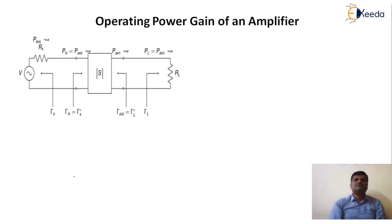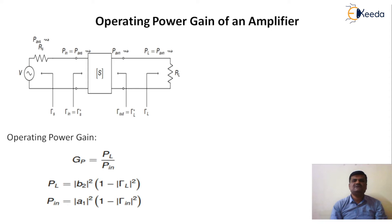Figure shows a two-port network with different powers. Now we will calculate operating power gain. Operating power gain Gp is given as equal to PL bar divided by Pin, where PL is power delivered to the load divided by input power. PL equals mod b2 squared into bracket 1 minus mod gamma L squared. Same as input power, Pin equals mod a1 squared into bracket 1 minus mod gamma in squared. We have derived these two equations in previous lectures.